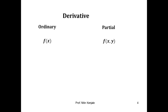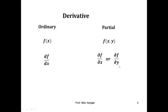Say f(x, y), where x and y are two independent variables. We denote the ordinary derivative of f with respect to x by df/dx, whereas the partial derivative of f can be performed with respect to x as well as y. When we perform the partial derivative of f with respect to x, it is denoted by ∂f/∂x, and the partial derivative of f with respect to y is denoted by ∂f/∂y.